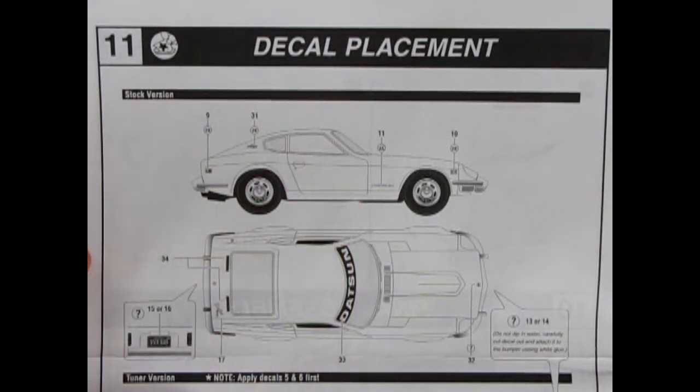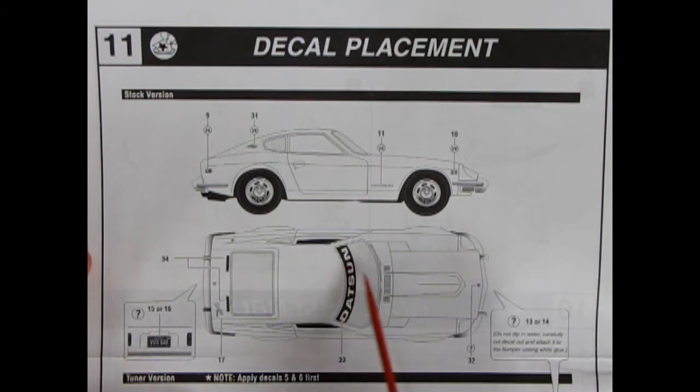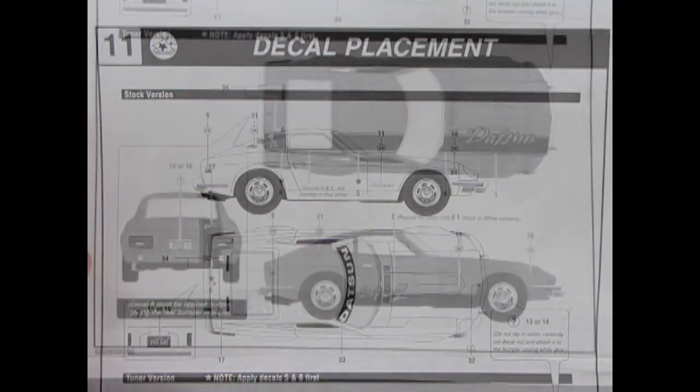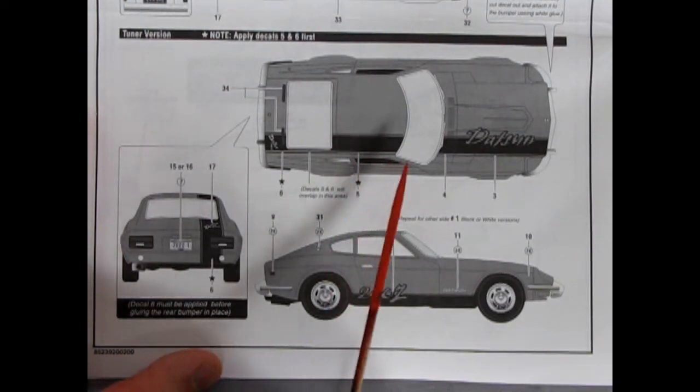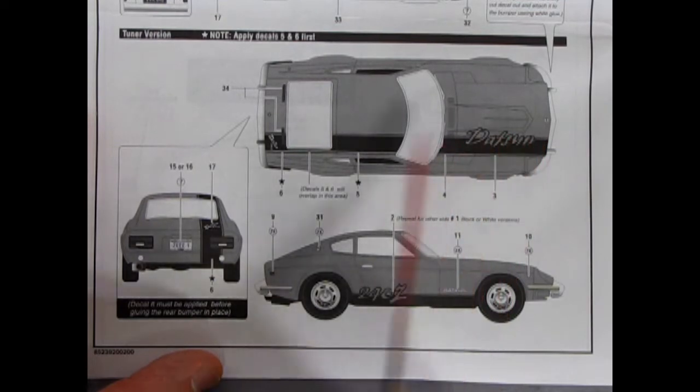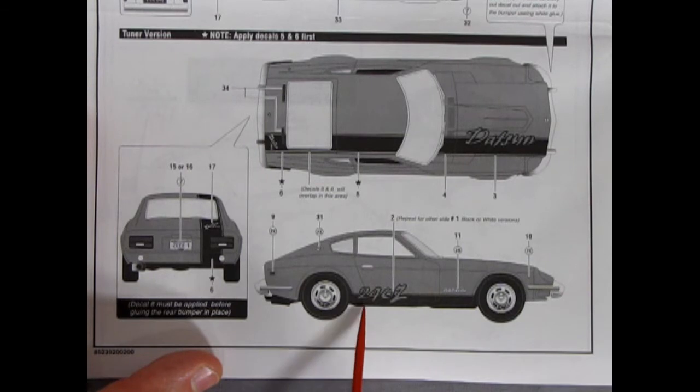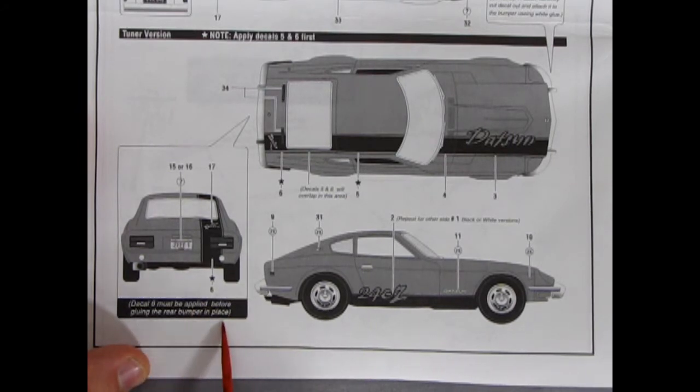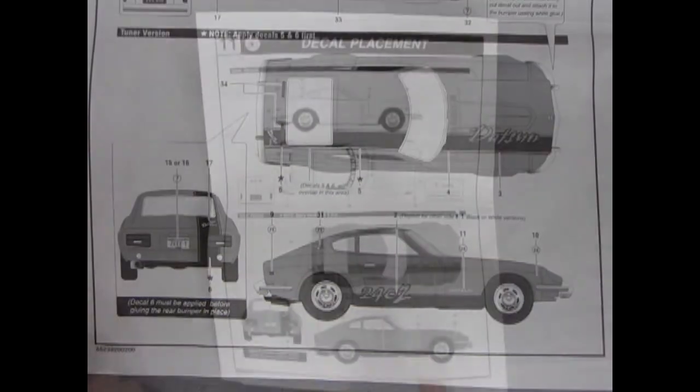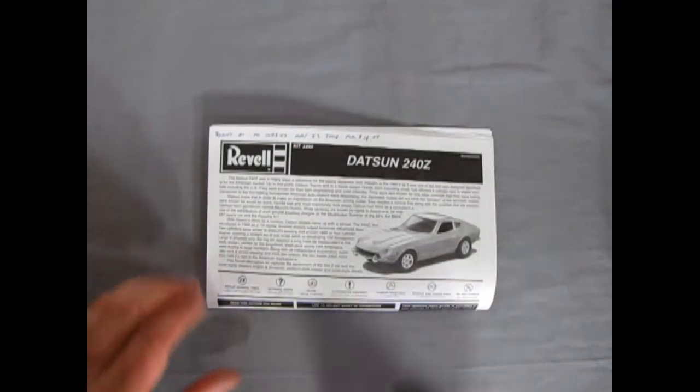Panel 11 shows your decal placement. There's two decal placements here. We'll start with the stock version. They have this nice Datsun sticker right across the front of the window to act sort of as a big sun visor. It shows you all the little decals to place on here. They have the turn signals, a choice of license plates to pop on the back and all the rest. Our final image is the tuner version. I can't really decide whether to build a stock or a tuner, but I guess my cracked up decals will be the answer. It does look cool with the Datsun name right on the side as well as on the back in this stripe. The 240Z is accented again in this decal along the bottom. Decal 6 must be applied before gluing the rear bumper in place. That completes our look at the instruction sheet for our Revell Datsun 240Z.